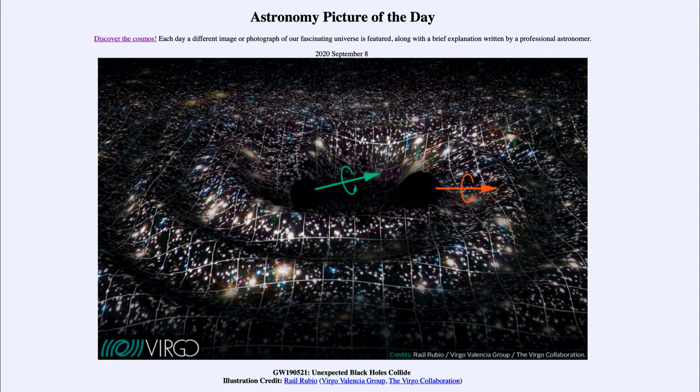So that was our picture of the day for September 8th, 2020. It was titled GW190521: Unexpected Black Holes Collide. We'll be back again tomorrow for the next picture. So until then, have a great day everyone, and I will see you in class.